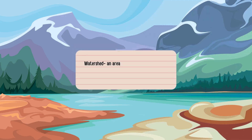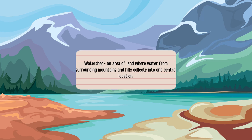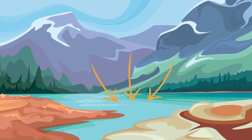Let's begin by defining what a watershed is. A watershed can be defined as an area of land where water from surrounding mountains and hills collects into one central location. Take a look at the cartoon picture on this slide. How did the water get to where it is now? Where did it come from?